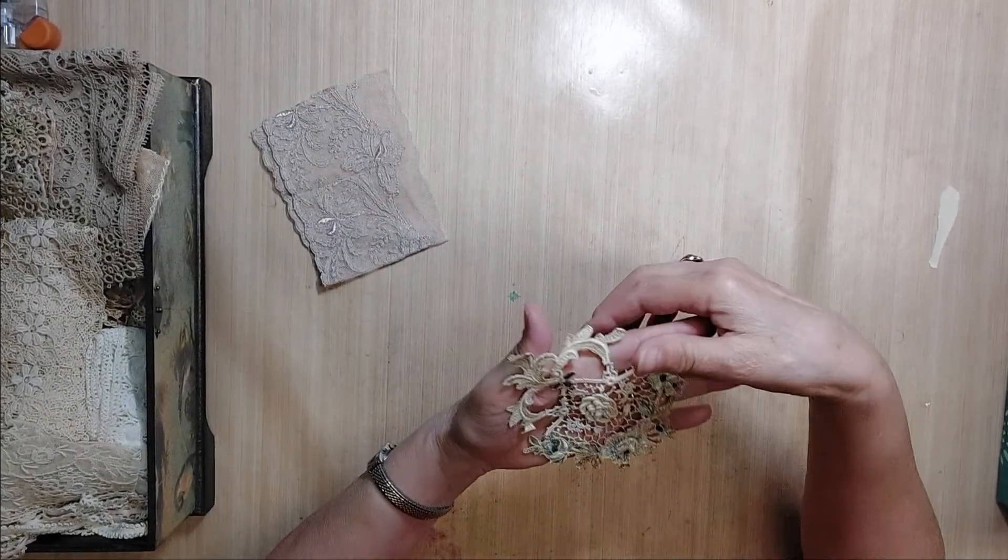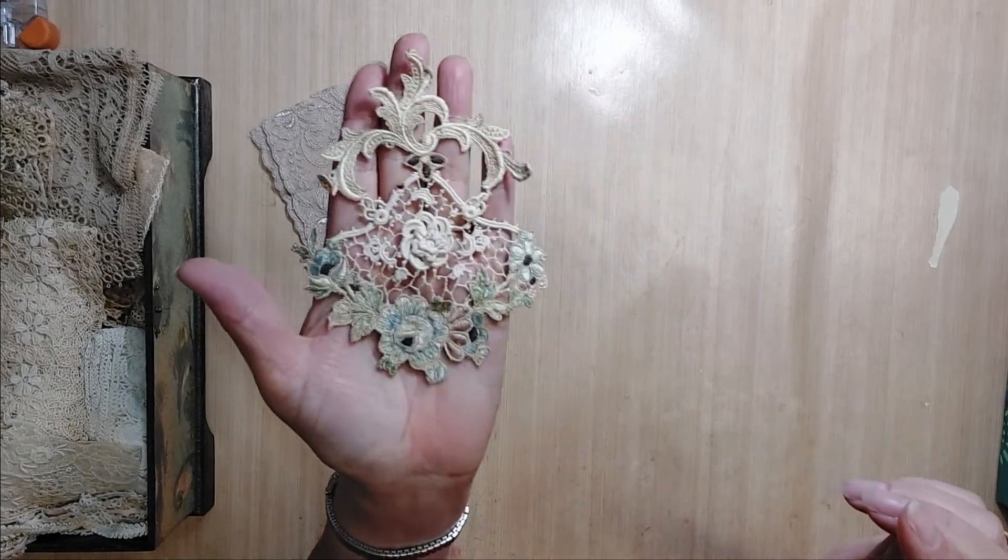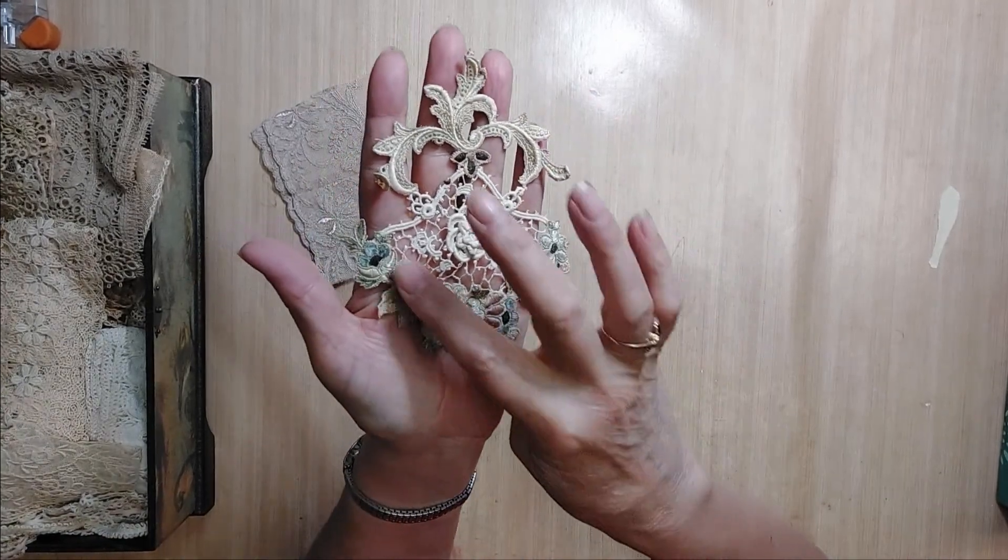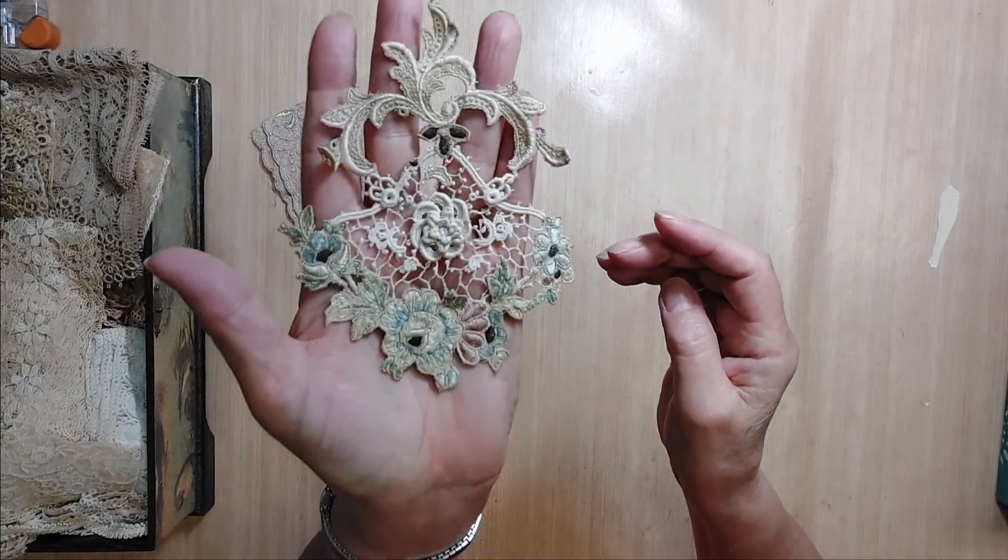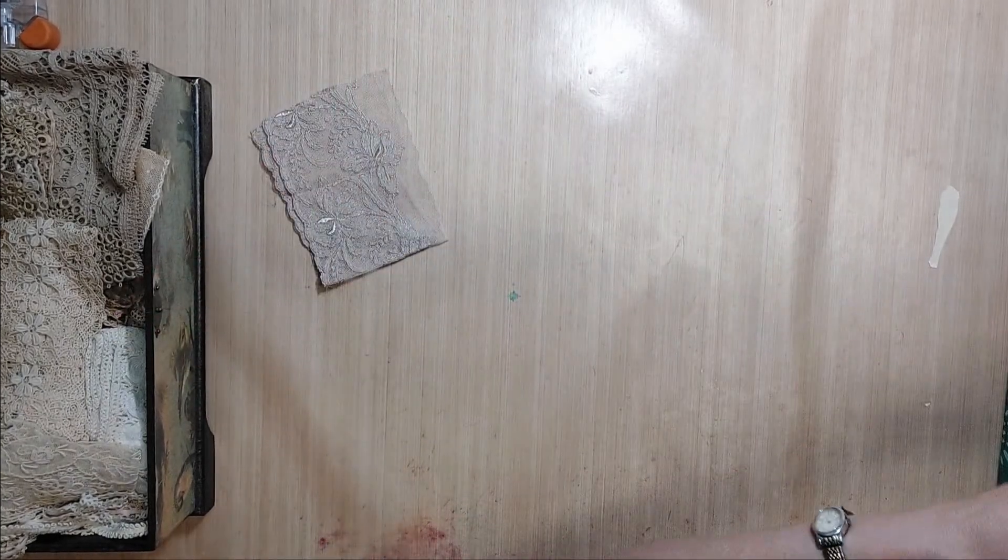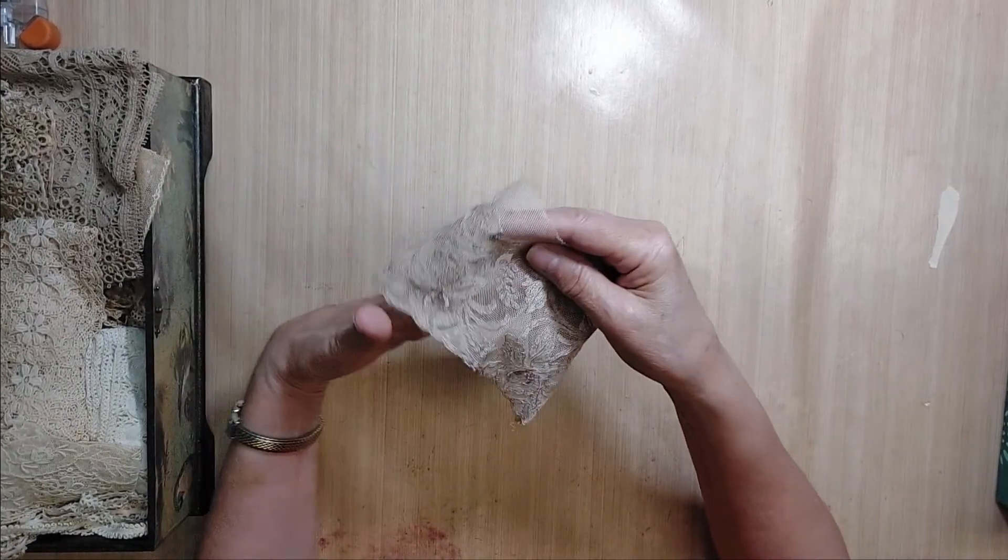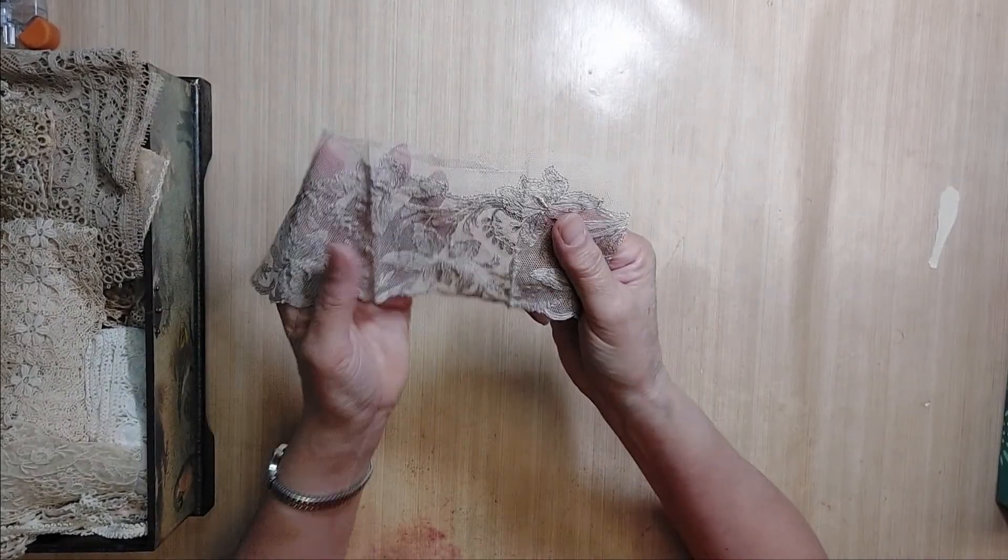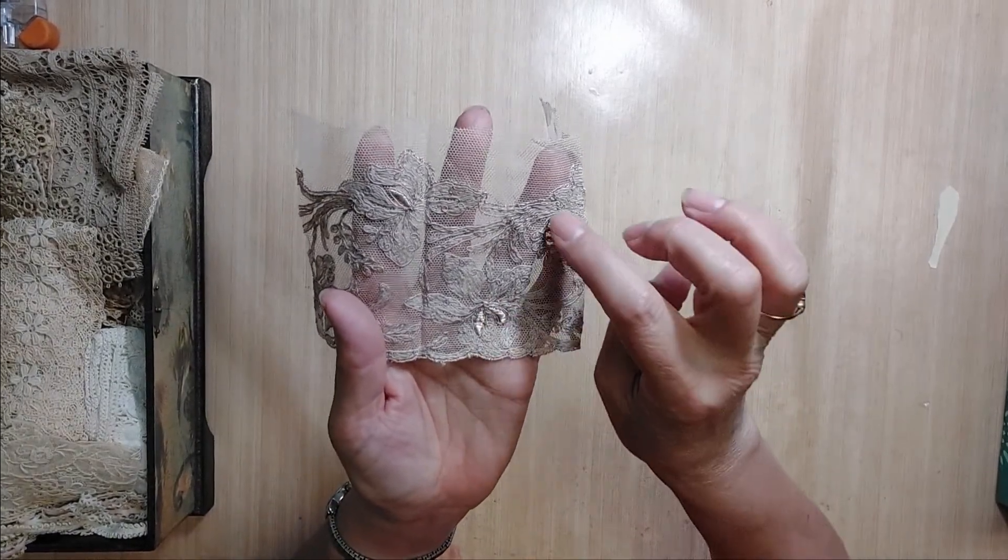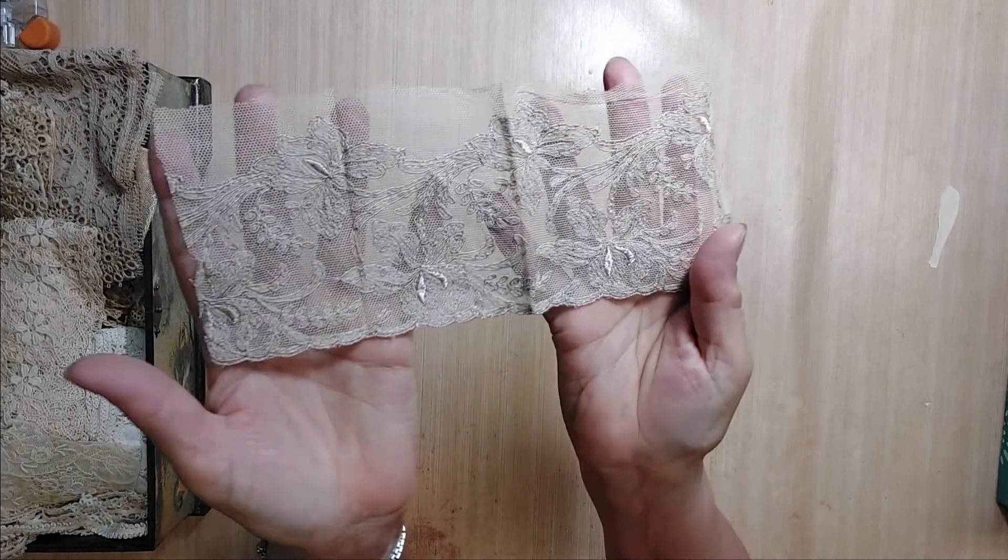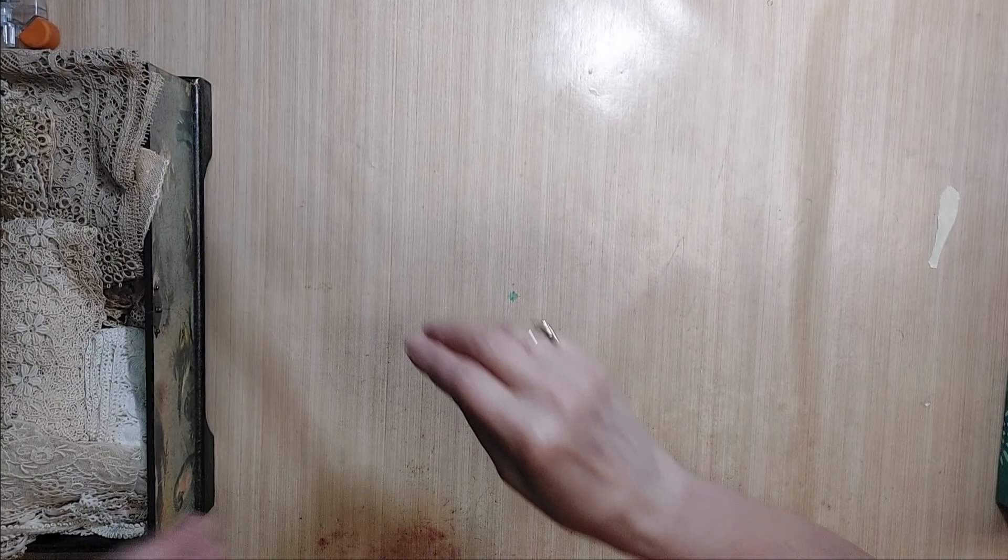This one is gorgeous. I love it. Has a little bit of color in spots. So pretty. And I'm sure that one is antique. Here's some more of that lace with the really heavy embroidery in spots. I think that's a French lace.